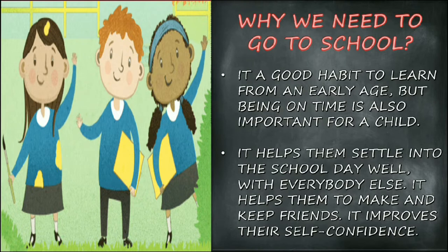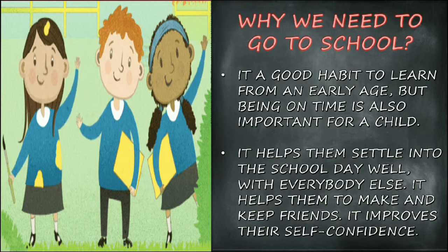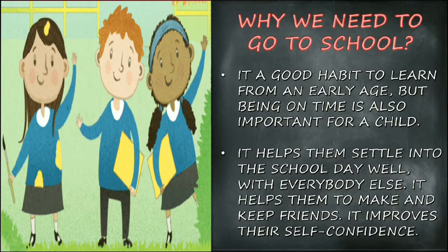It's a good habit to learn from an early age. Being on time is also important for a child. Children should join school around three to four years of age — that is the correct time for them to begin their education. Going to school from an early age helps them settle into the school day, helps them make and keep friends, and improves their self-confidence. It builds very good self-confidence and helps them live in a socially friendly environment.